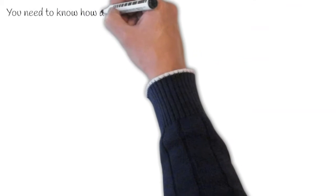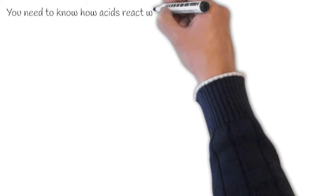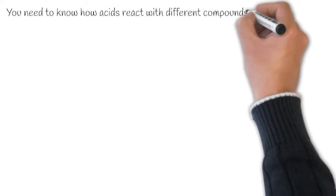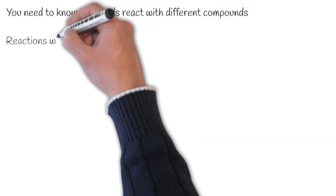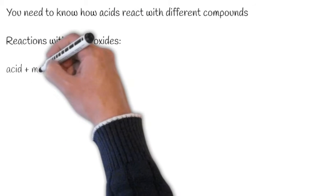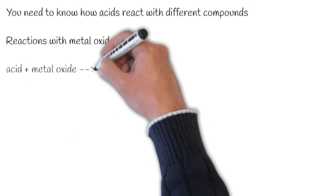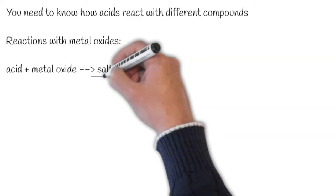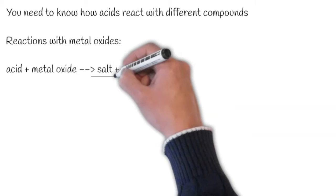You need to know how different acids react with different compounds. Let's take a look at how they react with metal oxides. You have to remember that an acid plus metal oxide makes salt plus water.